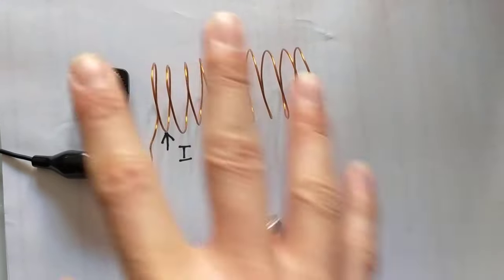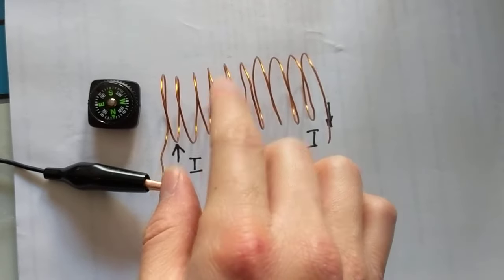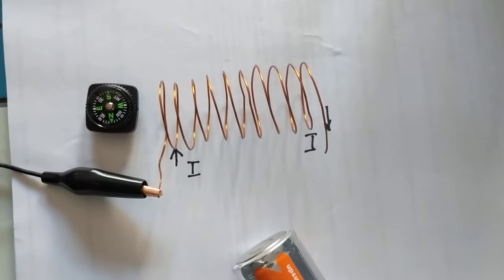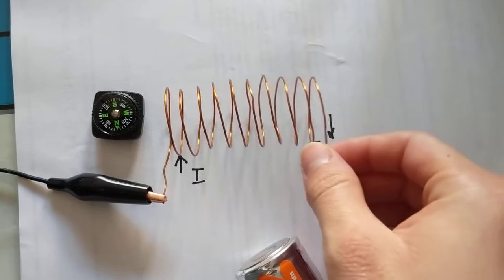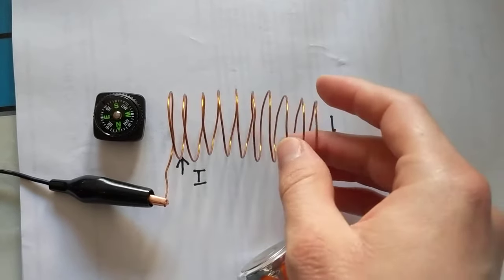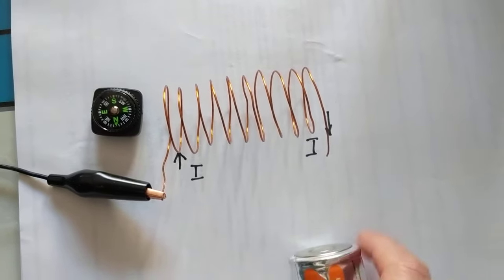In this video, we're going to determine what is the direction of the magnetic field in this solenoid. When we talk about solenoids, we can determine the strength of the magnetic field, which I'll talk about later, but we can also determine which way the magnetic field is going to point.